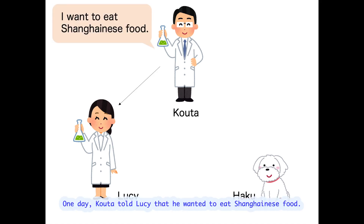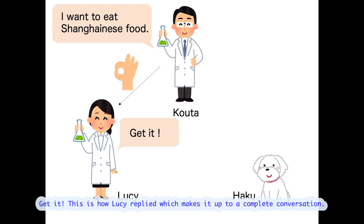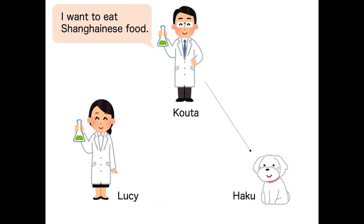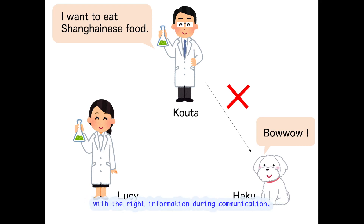One day, Kota told Lucy that he wanted to eat Shanghai food. This is how Lucy replied, which makes it a complete conversation. But if Kota is telling the same to Haku, he was probably just woofing back without understanding a thing. Therefore, it is important to tell the right person with the right information during communication.